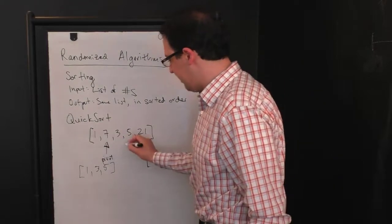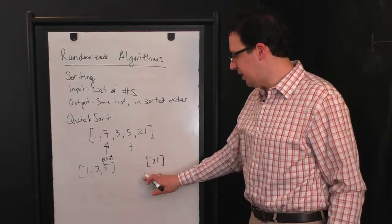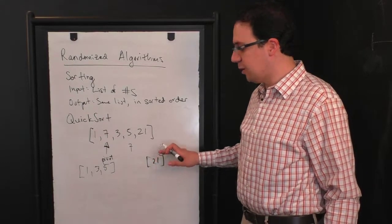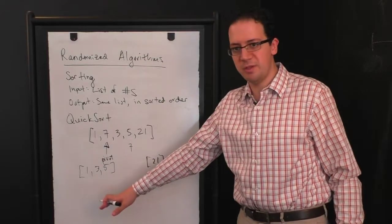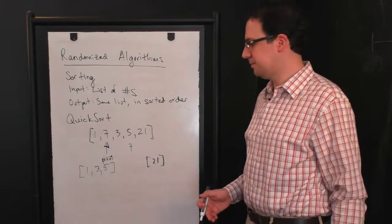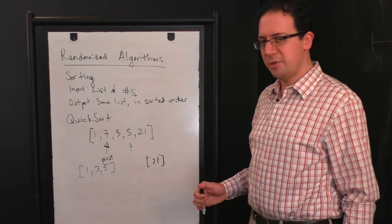So now what we have is the pivot, seven. We have the list of all numbers that are less than the pivot and the list of all numbers that are greater than the pivot. And then the algorithm recursively calls Quicksort on each of these. And that's it. That's the whole algorithm. So as you see, it's a very simple algorithm.